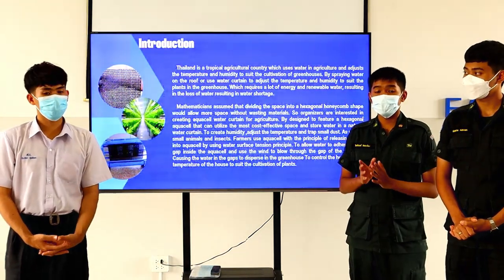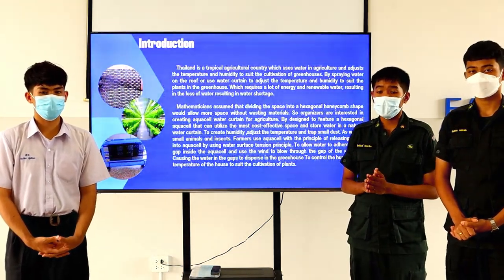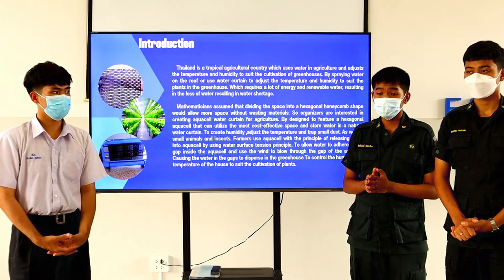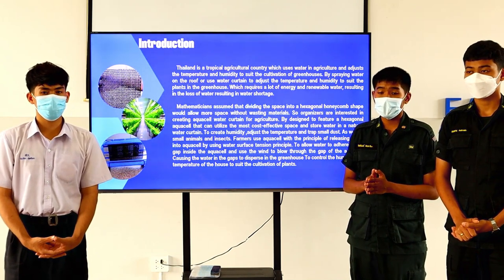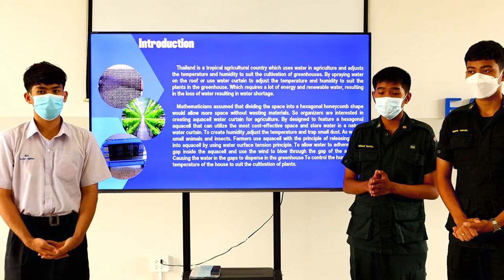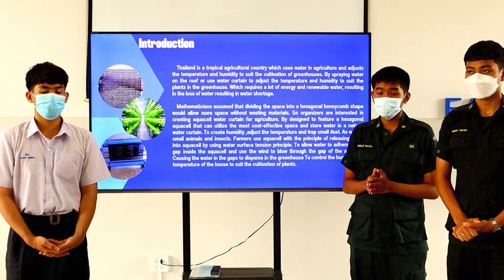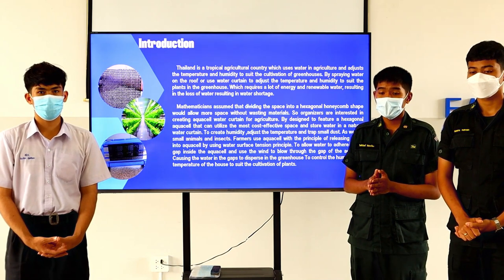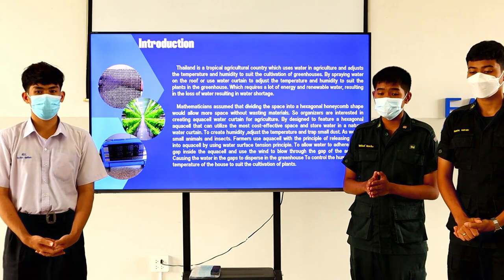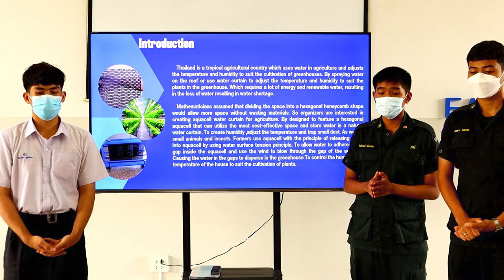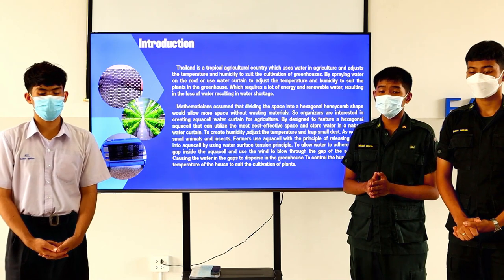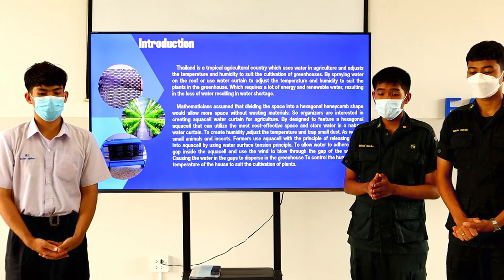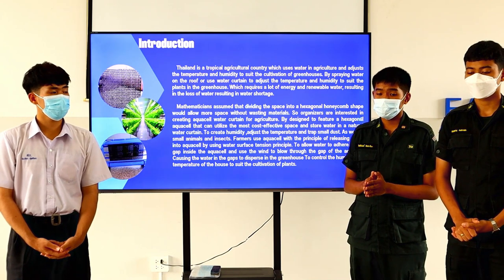The first topic is introduction. Thailand is a tropical agricultural country which uses water in agriculture and adjusts the temperature and humidity to suit the cultivation of greenhouses by spraying water on the roof or using a water curtain, which requires a lot of energy and water, resulting in water shortage.